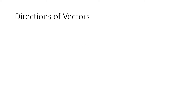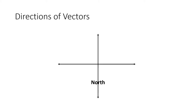Before I begin, let us talk first about the directions of vectors. We have four major directions: north, east, west, and south. Along the y-axis, we have two different directions. The one that goes upward is the north direction, and going downward is the south direction. Along the x-axis, going to the right direction, we have the east, and on the left side, towards the negative x-axis, is the west.